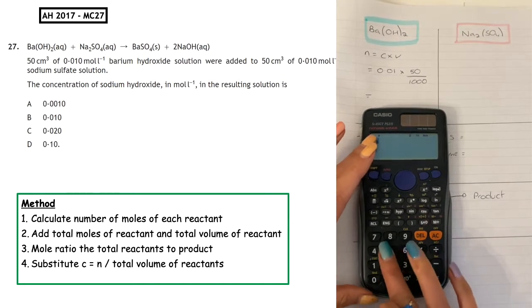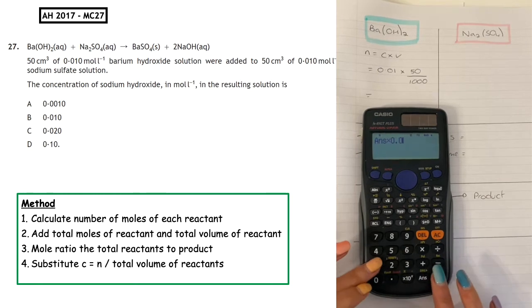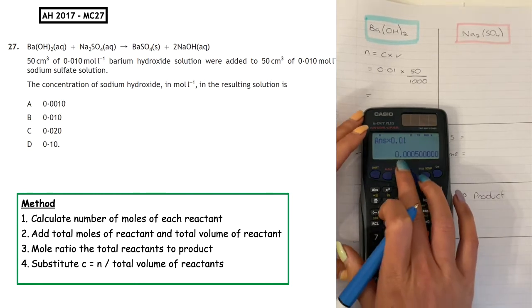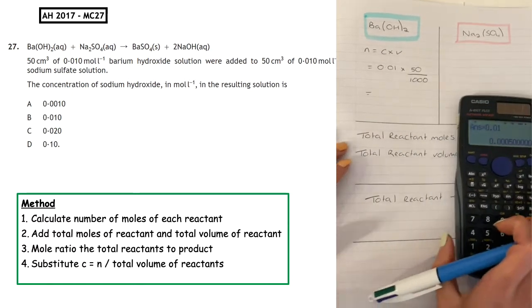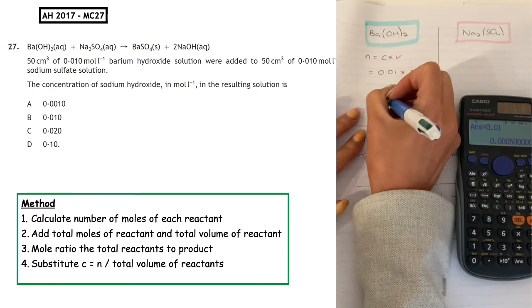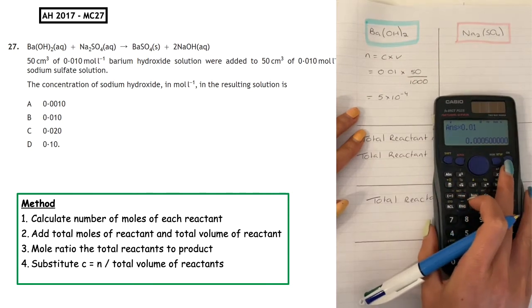When we put that into our calculator, 50 divided by 1000 times 0.01 gives us 1, 2, 3, 4 zeros in front of the 5. So that is 5 times 10 to the minus 4, or you can pop that into your calculator.